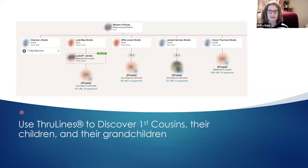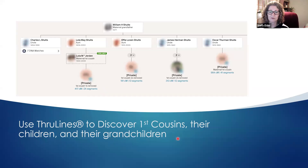Here's a tip: if you're using AncestryDNA, you can use ThruLines to discover these closest matches. It will show you first cousins and their children and grandchildren, provided they have a tree attached and linked to ThruLines with their tree either public or private but searchable. Even if a tree isn't public, as long as it's not private and unsearchable, they'll show up in ThruLines, giving you clues about which ancestral line they come through.